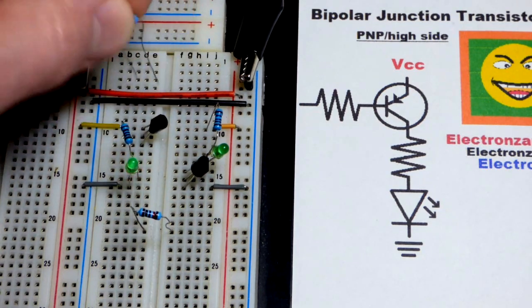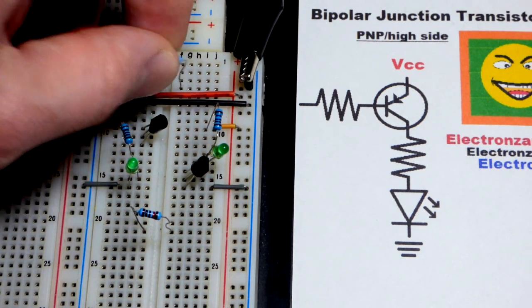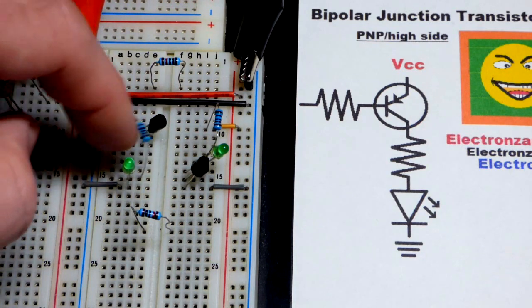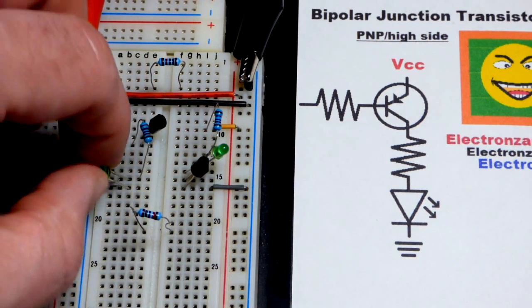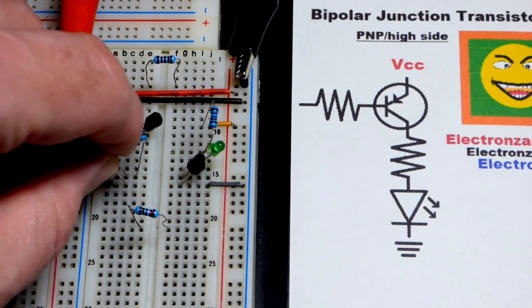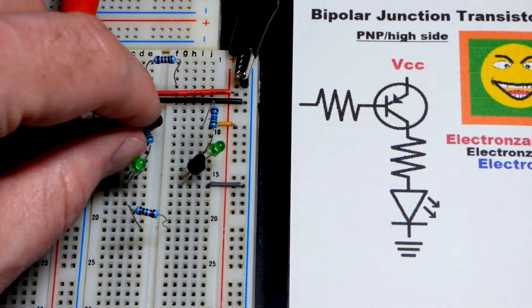I'll just yank that out because that's kind of distracting. And the collector comes to the resistor. Resistor comes to the LED. Long lead the anode to the resistor, short lead the cathode going to ground.